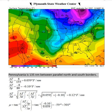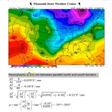We'll use the method of center differences. We'll look at this contour here, this isotherm, and this one over here on the other side. We note that this distance is very similar to the distance of Pennsylvania between the parallel borders, which is 135 nautical miles. Each one of these contours is 4 degrees Fahrenheit, so we have two of them — 8 divided by 135 nautical miles gives us a gradient in the x-direction of 0.059 degrees Fahrenheit per nautical mile.